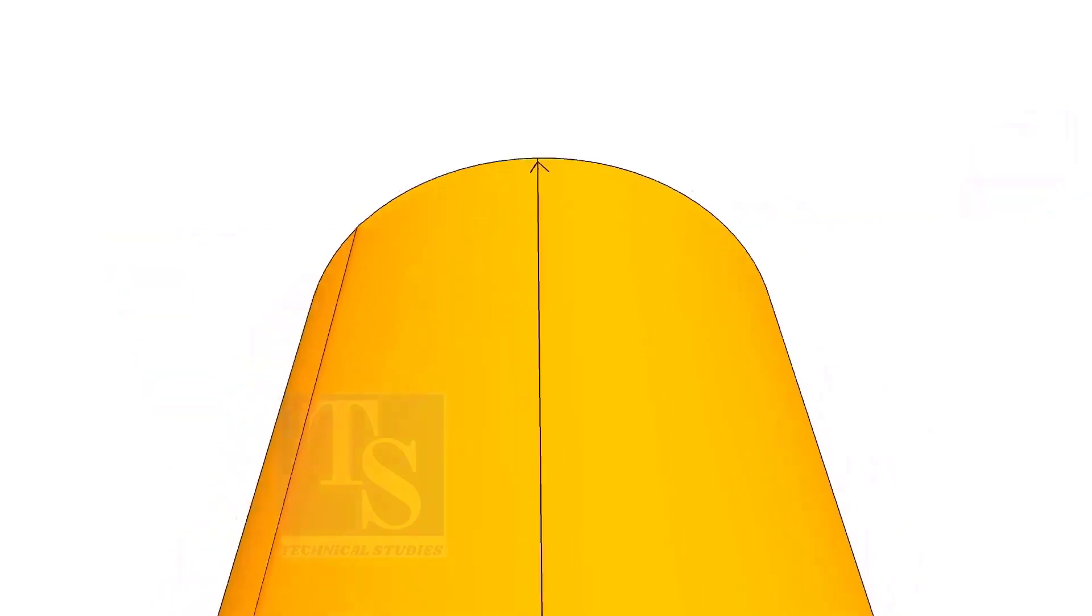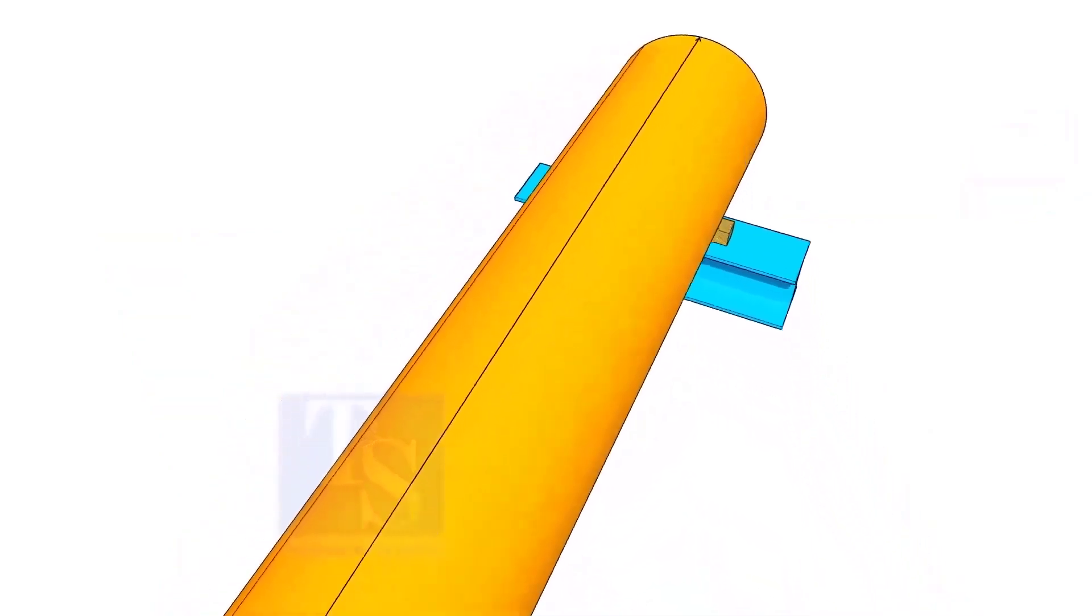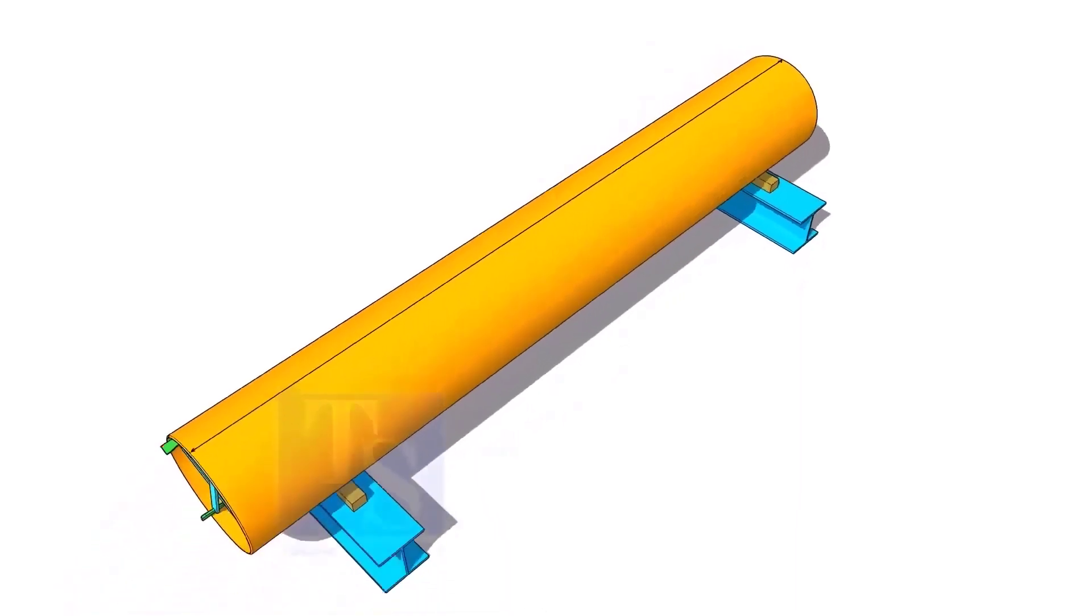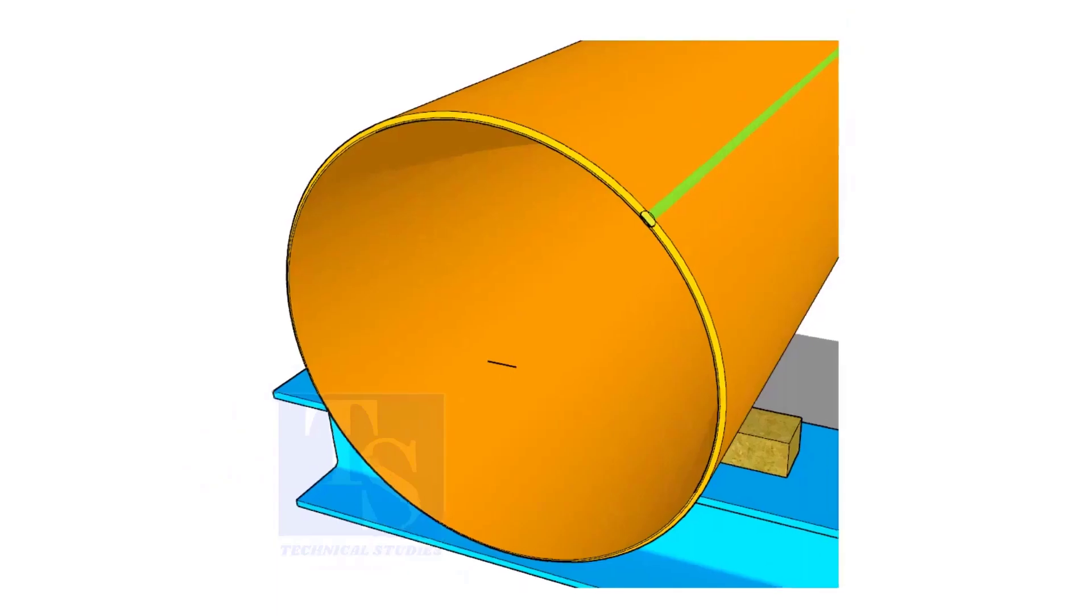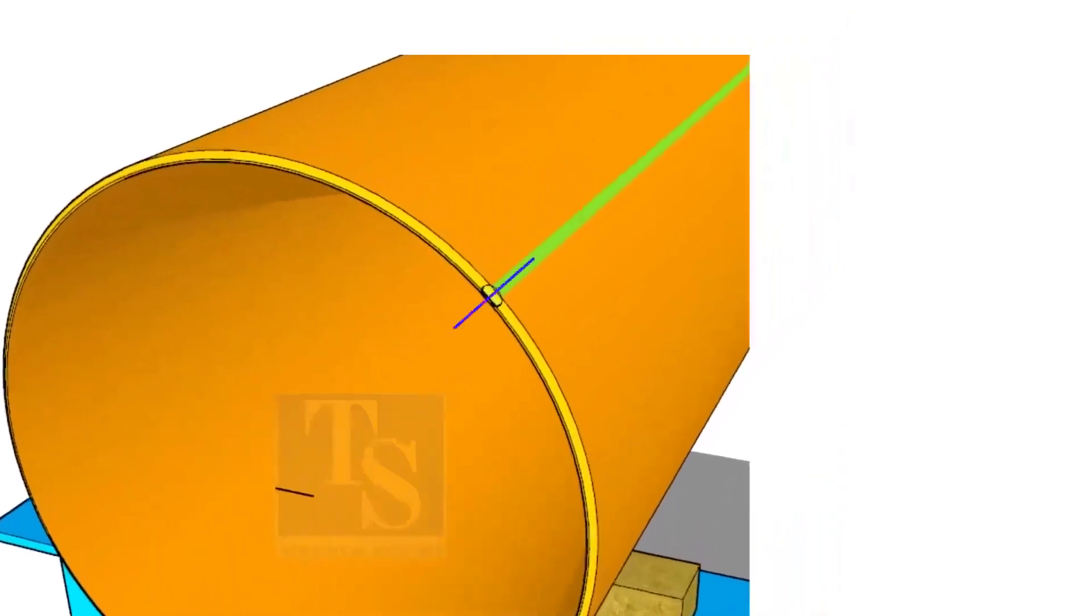Draw a line connecting these marks. If the pipe is welded, you can choose the center of the welding as center of the pipe, but you need to check and make sure.